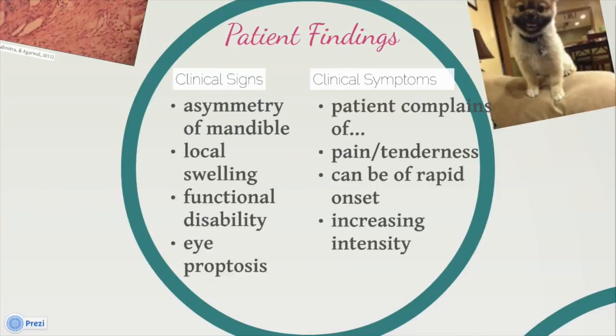Patients experiencing ABC rapid growth will complain of local pain, tenderness, or functional disability. When located in the orbit, the cyst can cause proptosis of the eye.